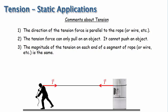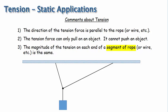Notice that the statement refers to a segment of the rope or wire, etc. I'll show you what this means by considering a new scenario. In this scenario, a block is suspended by some wires. Because of this connection point here, where the wires are all tied together, we will consider this to be three wire segments, and each wire segment potentially has a different tension. So one wire segment will have a tension force on each end of T1, another wire segment will have a tension on each end of T2, and the third wire segment will have a tension on each end of T3.